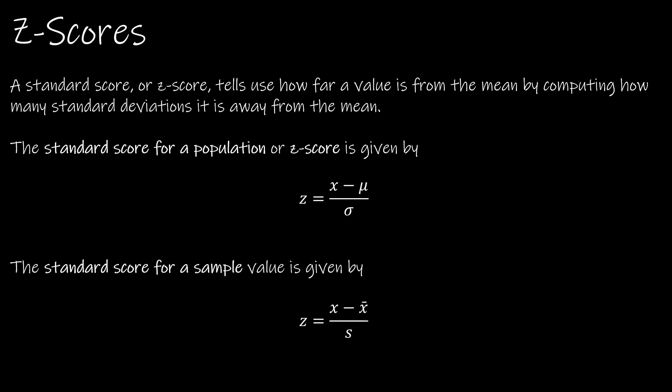What is a z-score? A z-score, which you'll sometimes see referred to as a standard score, tells us how far a value is from the mean by computing how many standard deviations it is from the mean. That's the key — how many standard deviations it is away from the mean. It tells us the number of standard deviations to the left or right of the mean.